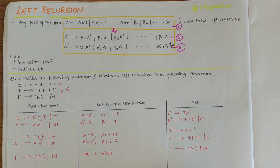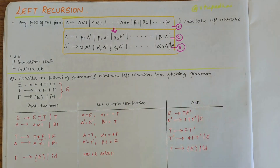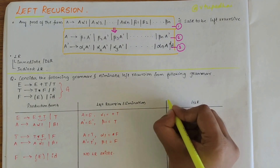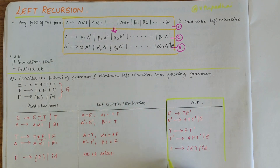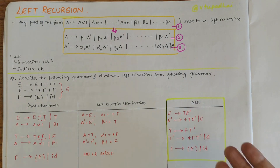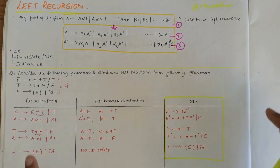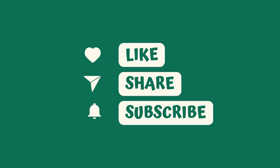This is our grammar GLR, which is free of left recursion after eliminating it. We can put a box here depicting this as the required answer. This is how you eliminate left recursion from a given grammar. I hope you have understood this procedure — if you have any doubts, let me know in the comments, and subscribe to my channel. Thank you.